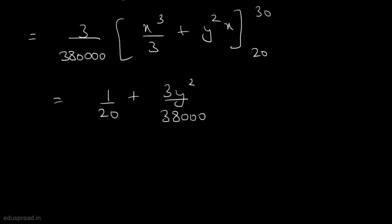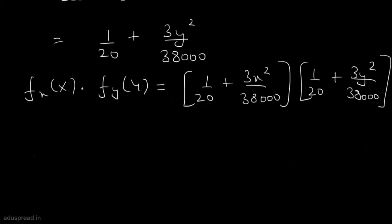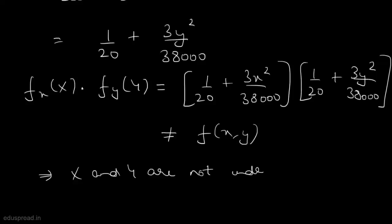Multiplying the two marginal distributions: f_X(x) × f_Y(y) = (1/20 + 3x²/38000)(1/20 + 3y²/38000). This product does not equal the joint PDF f(x,y) = (3/380000)(x² + y²). Therefore, x and y are not independent random variables.